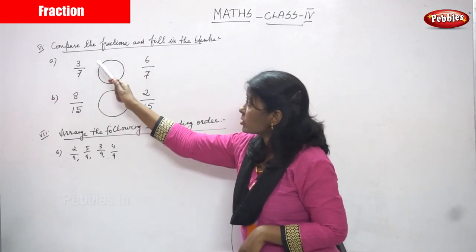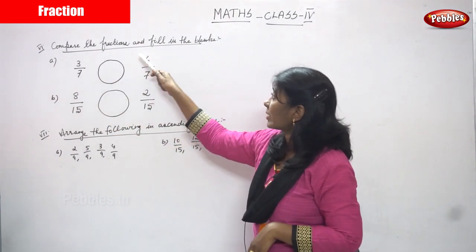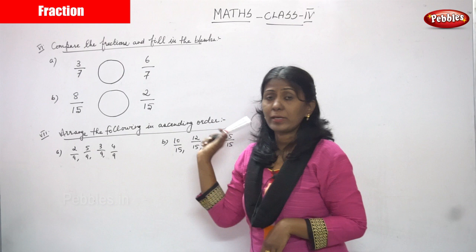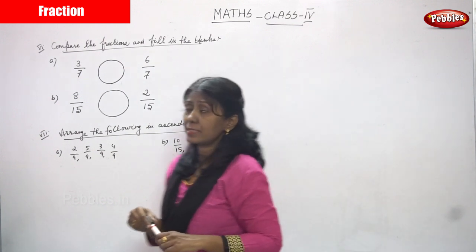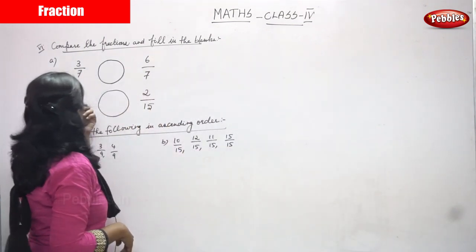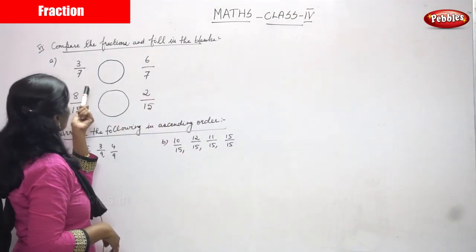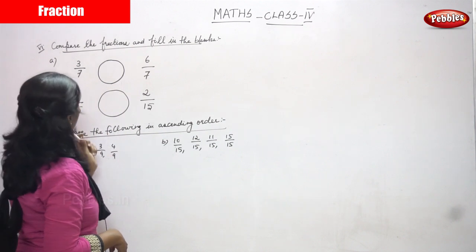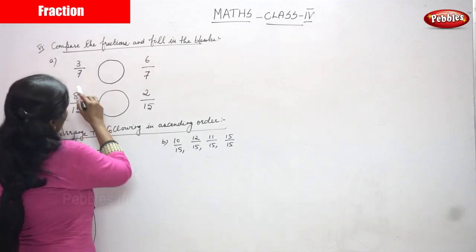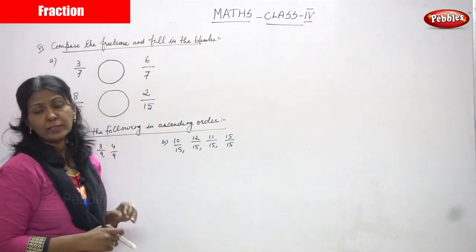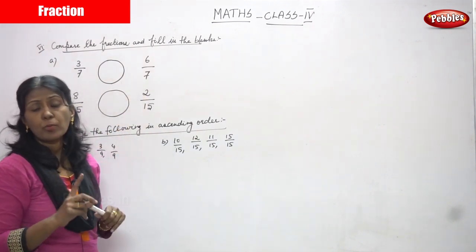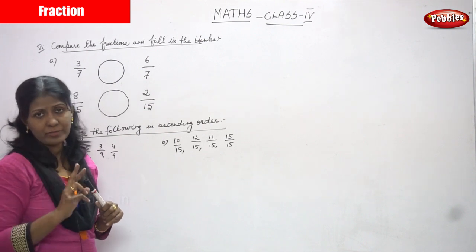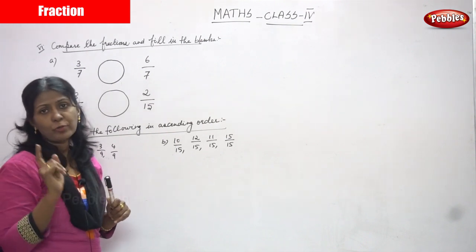This is the sixth subdivision: compare the fraction and fill in the blanks. Let's start the problems. First question: 3 by 7 and 6 by 7. Look at the denominators first — you have to check whether both denominators are the same or different. That is the first step.